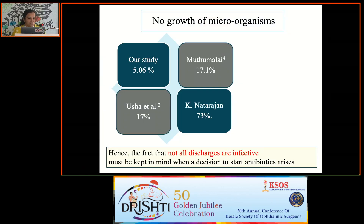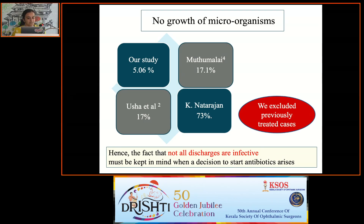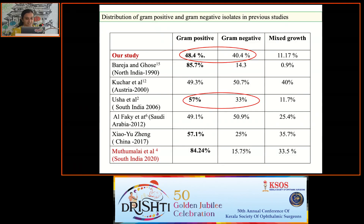The percentage of negative culture was very low compared to previous studies, perhaps because we excluded previously treated cases. The fact that not all discharges are infective must be kept in mind when a decision to start antibiotics arises. Distribution of gram-positive and gram-negative organisms is highly variable in previous studies. We got results similar to Ushakiran et al. 2006, and another South Indian study by Murugesan et al. done in 2020, which had a higher involvement of gram-positive organisms.